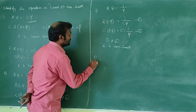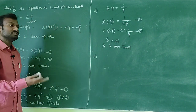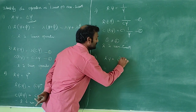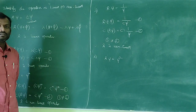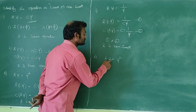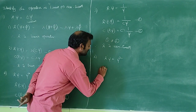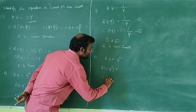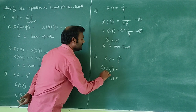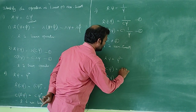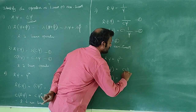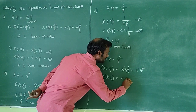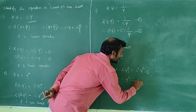Fourth example: A-cap(ψ) equals ψ². Applying the first method — A-cap(C·ψ) gives (C·ψ)² which equals C²·ψ², while C·A-cap(ψ) gives C·ψ². Since C² is not equal to C, equations 1 and 2 are not equal. Therefore ψ² is a non-linear operator.